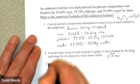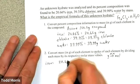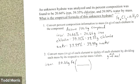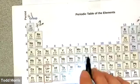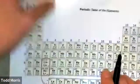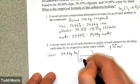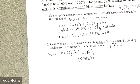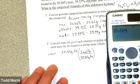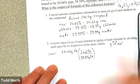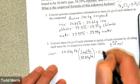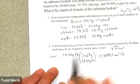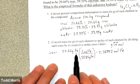For iron, we have 20.66 grams of Fe in 100 grams of compound. We convert that to moles using iron's molar mass of 55.85 grams per mole. So 55.85 grams of iron is equivalent to one mole of iron. Dividing: 20.66 divided by 55.85 gives us 0.36992 moles of iron.